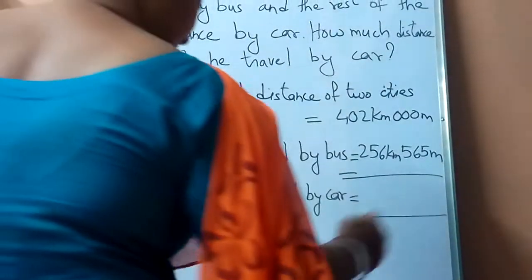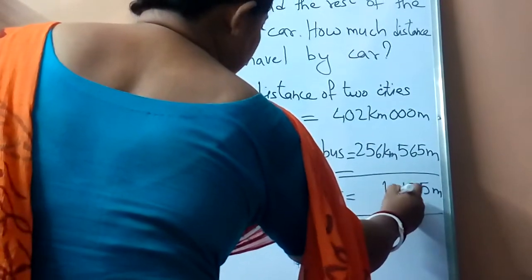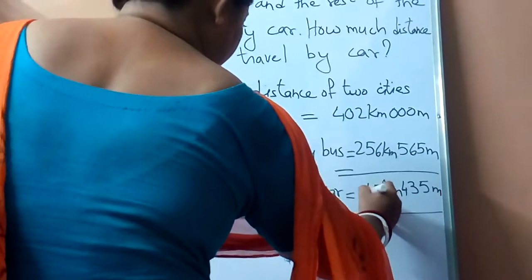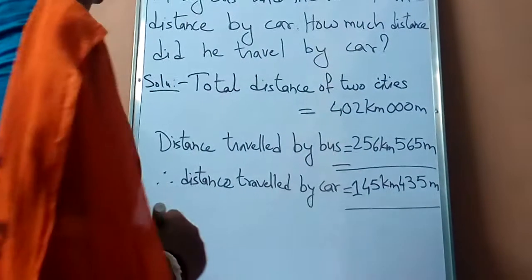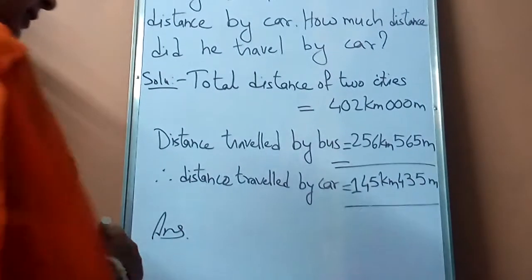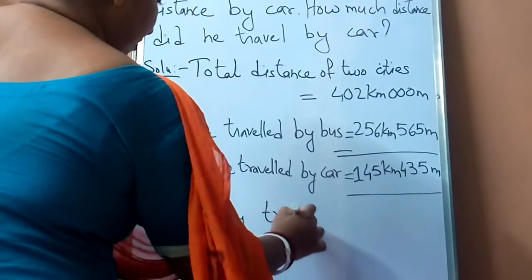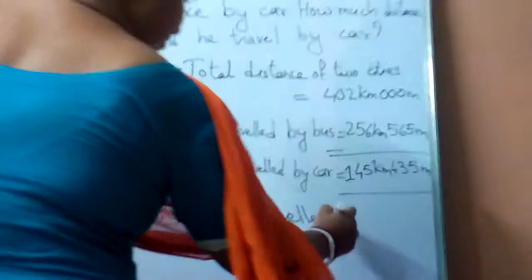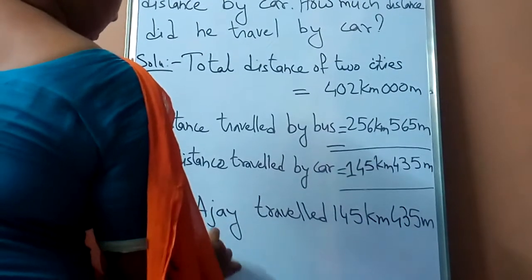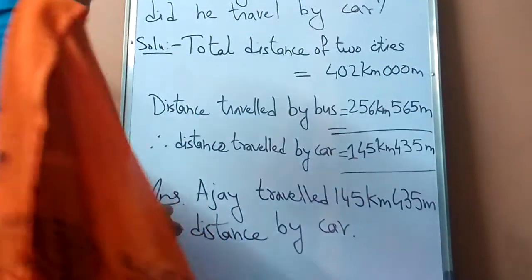Now start subtraction. This will be 5, 3, 4 for the meter part, then kilometer: 5, 4 and 1. That is 145 kilometer and 435 meter. At the last you will write the answer as — since Ajay is travelling, you have to start with Ajay — Ajay travelled 145 kilometer and 435 meter distance by car. So this is the second question.